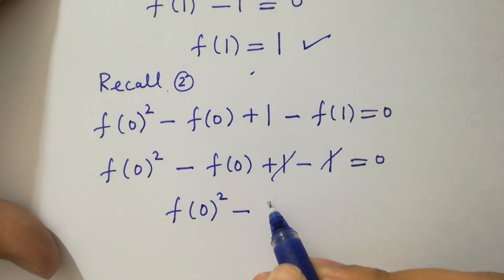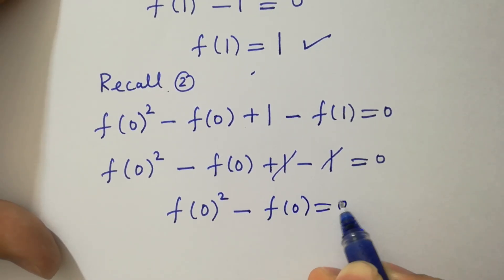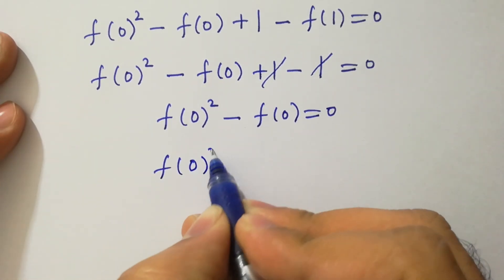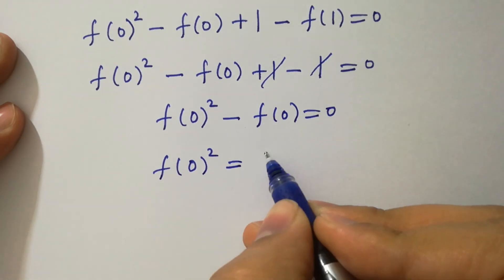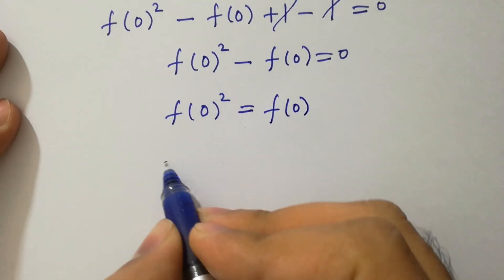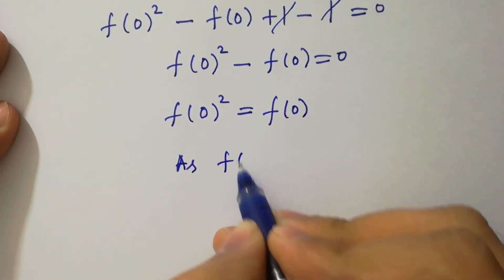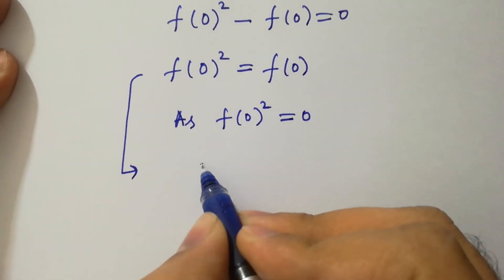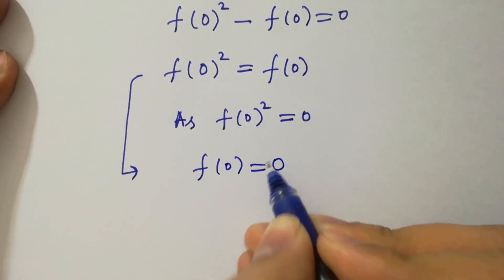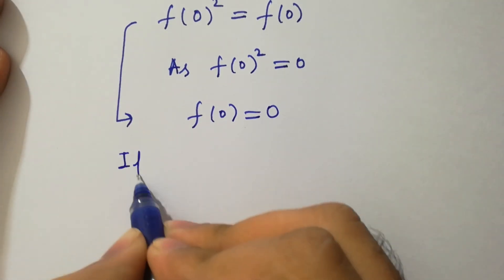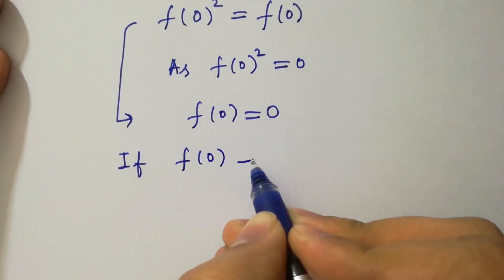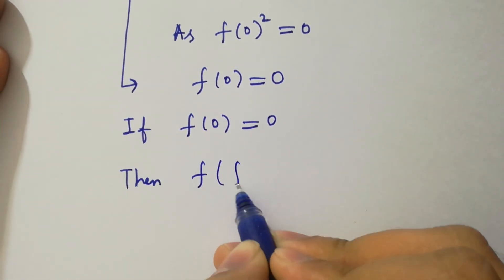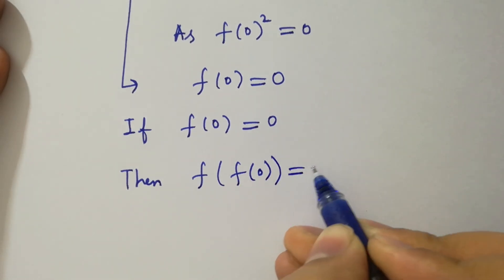So we have f of 0 squared equals f of 0, which gives f of 0 squared minus f of 0 equal to 0. This means f of 0 times the quantity f of 0 minus 1 equals 0, so f of 0 equals 0 or f of 0 equals 1. If f of 0 equals 0, then f of f of 0 would also equal 0.